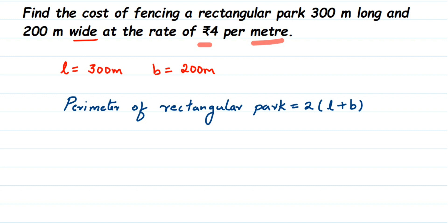Now let's substitute the values here. It's 2 into length is 300, so 300 plus breadth is 200. So 300 plus 200, which is 500. So it will be 2 into 500, which is 1000. So we got here 1000 meters. Total perimeter of rectangular park is 1000 meters.